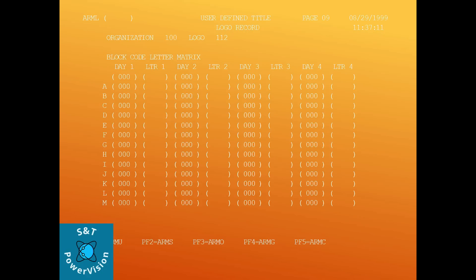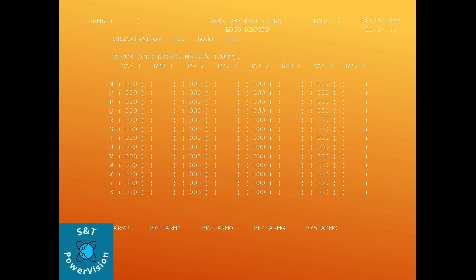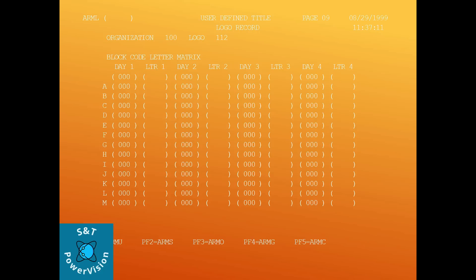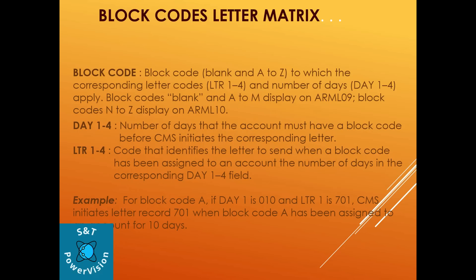Now here is the letter matrix. Like the block code matrix, there are also 27 block codes A to Z and space here. Day 1 to 4 indicates the number of days the account must have a block code before CMS initiates the corresponding letter. Letter 1 to 4 is the code that identifies the letter to send when a block code has been assigned to an account for the number of days in the corresponding Day 1 to 4 field. That letter request goes to the LTS module, which then triggers the letter request.